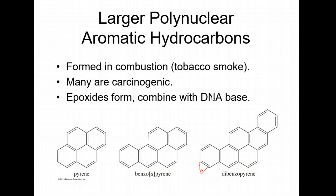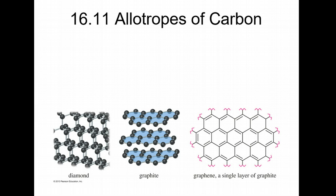Section 16.11: allotropes of carbon. What's an allotrope? An allotrope is just other forms of carbon. There are three, technically four forms of carbon. There's diamond, there's graphite, and then there's something called a fullerene or a buckyball. These are just other forms of carbon. A diamond basically is single carbons in a tetrahedral formation bonded to other carbons.